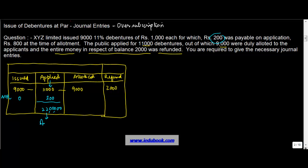This is what you got on application. So when you did this application out of this, you allotted only 9,000, right? So how much application money was supposed to be used for the allotment of these shares? It's 9,000 into 200. 18 lakh.